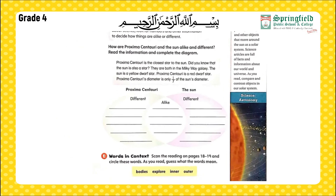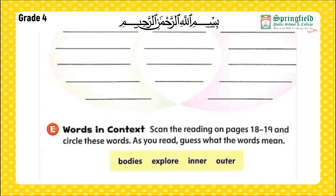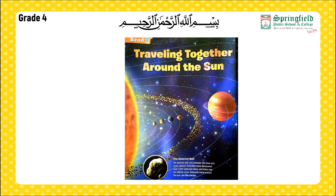Now moving to Part B, words in context. Scan the reading on pages 18 and 19 and circle these words as you read, guessing what they mean. You have been provided with four words: bodies, explore, inner, outer. As you listen to the audio text, circle these words from your text.